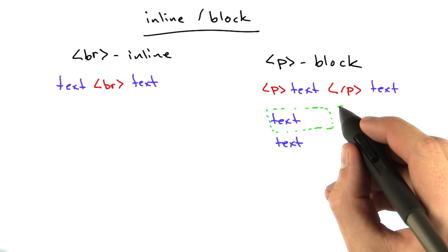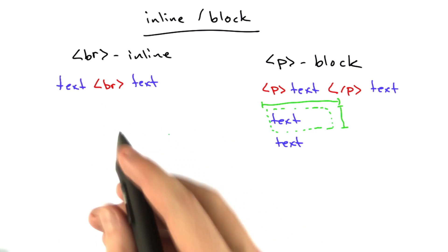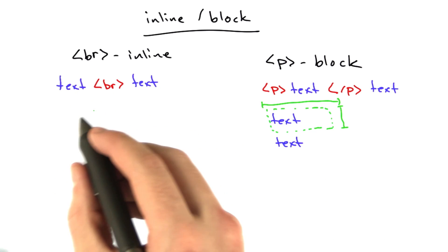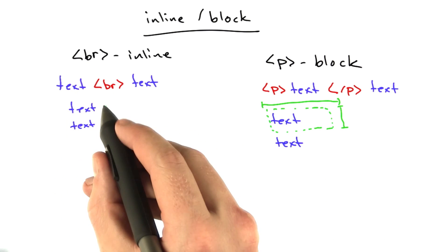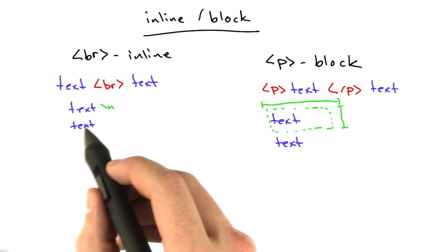And this invisible box can actually have height and it can have width, where inline elements are just text. So the example over here would be more like this. So it's just two lines of text and there's really just a little new line here. There's nothing fancy going on.